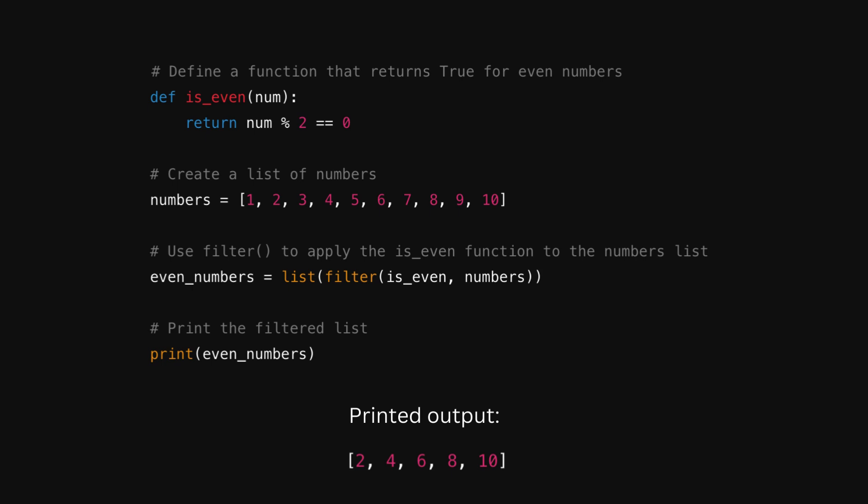So the filter function will iterate through each number in the list and apply the isEven function. If that number is even, it will return true, and that element will be included in the iterable created by the filter function.